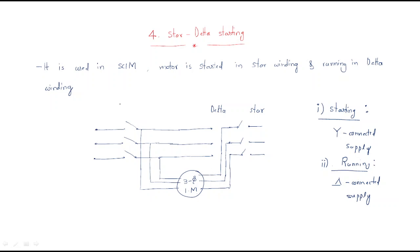When connected in star, the starting current will be decreased. In the delta connected system, the starting current will be increased and the starting torque will be maintained. So for this requirement we use the star-delta starting method.